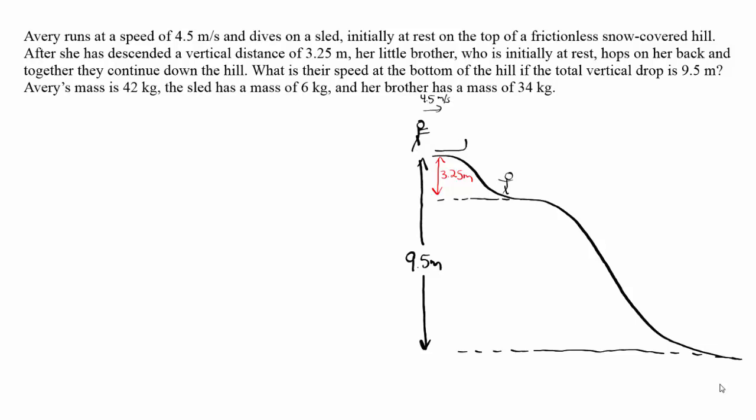This problem involves conservation of momentum and conservation of energy, and shows how to take a problem that has multiple parts and break it down into individual pieces. We have a girl who's running and jumps on a sled, slides partway down a hill where her brother jumps on, and then together they slide all the way to the bottom of the hill. Ultimately, we're trying to figure out how fast they're going at the bottom.